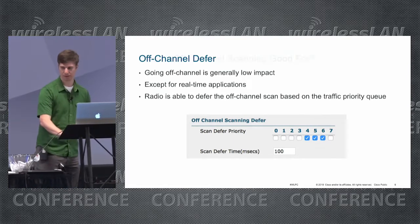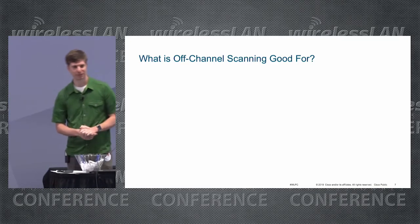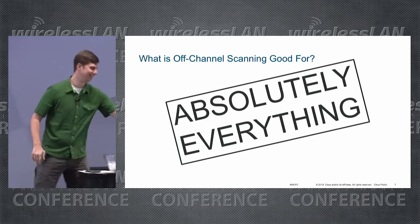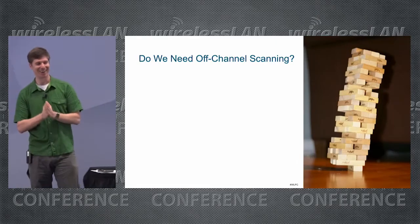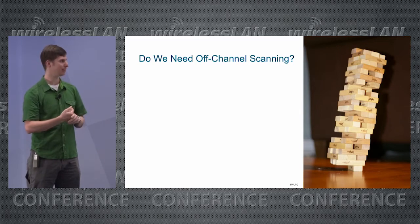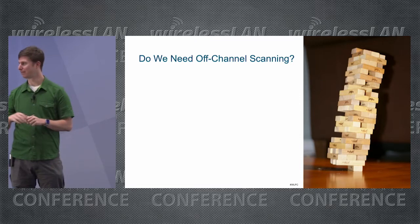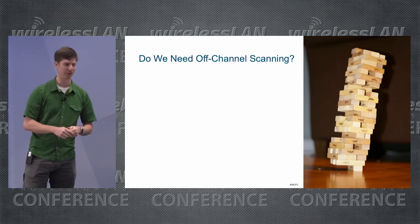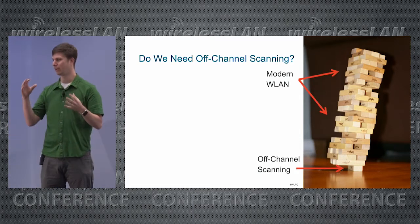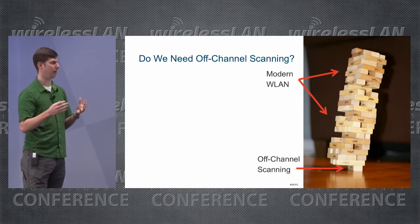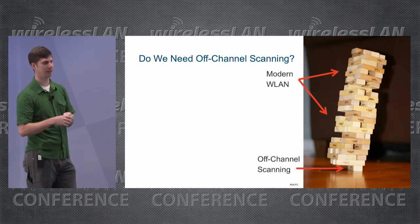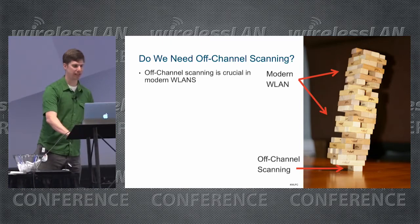So what is off-channel scanning good for? Well, absolutely everything. Off-channel scanning is really, really important. If we take this Jenga block analogy — I like to pull out all the bottom ones and hopefully it doesn't fall over — that's off-channel scanning right there on the bottom. It's the building block that holds everything else up. Without off-channel scanning, many of the functionalities that make an enterprise Wi-Fi system give you the features you've come to expect wouldn't really operate. Off-channel scanning is crucial.